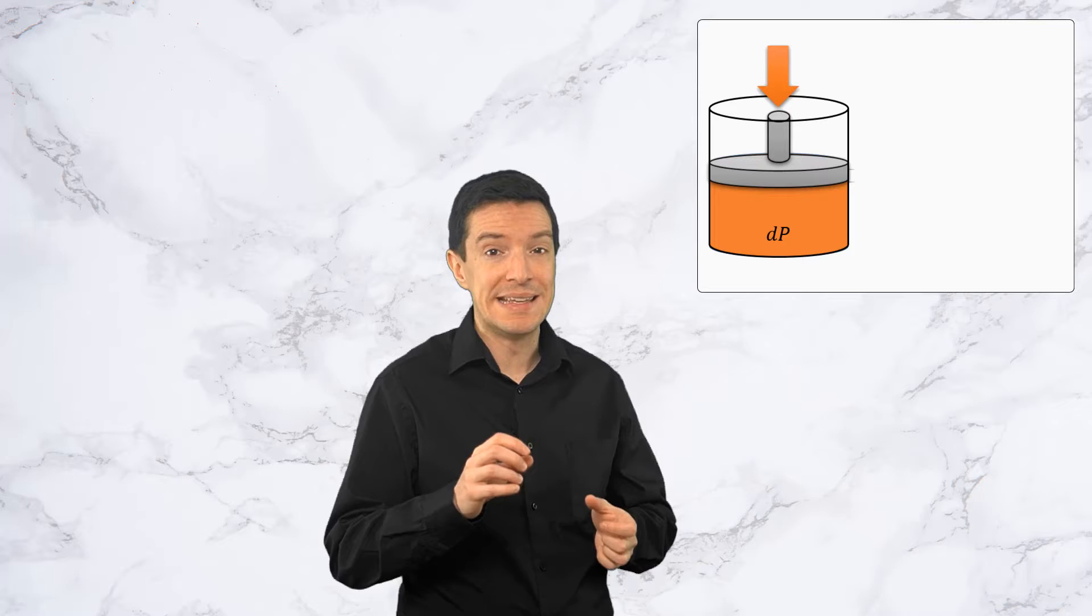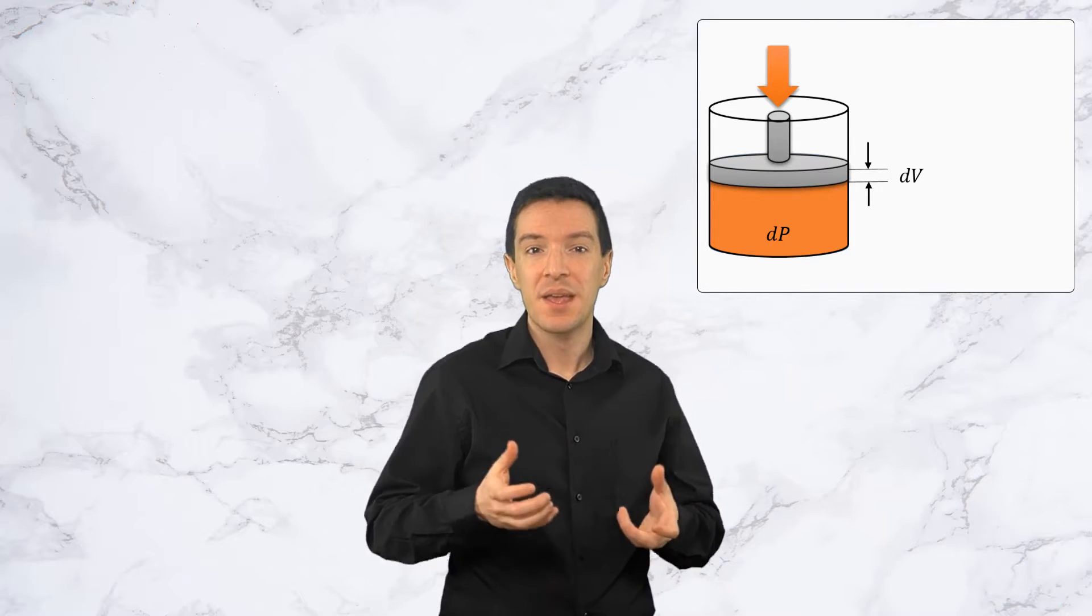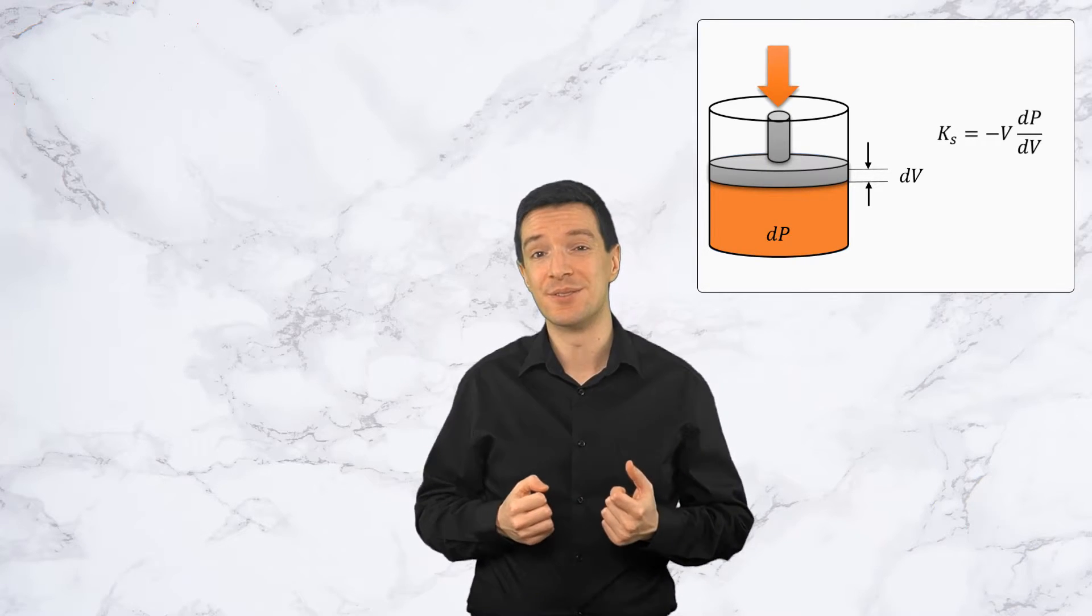Let us now try to mathematically define the concept of compressibility. If we consider that the increase in pressure by pushing the piston down is DP, and the reduction in the volume of air due to this pressure is DV, we can define a property called the bulk modulus, as shown in this equation.